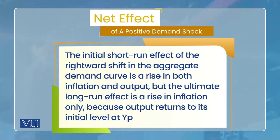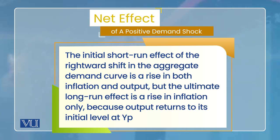Ab hum doosri side dekhte hain: agar negative demand shock aa jaaye. Negative demand shock ka example yahan pe le rahe hain deliberate disinflation, jis ka matlab hai central bank ne jo interest rate ka autonomous part hai - yani irrespective of, independent of inflation rate - us ko badha diya hai, yaani tight monetary policy.